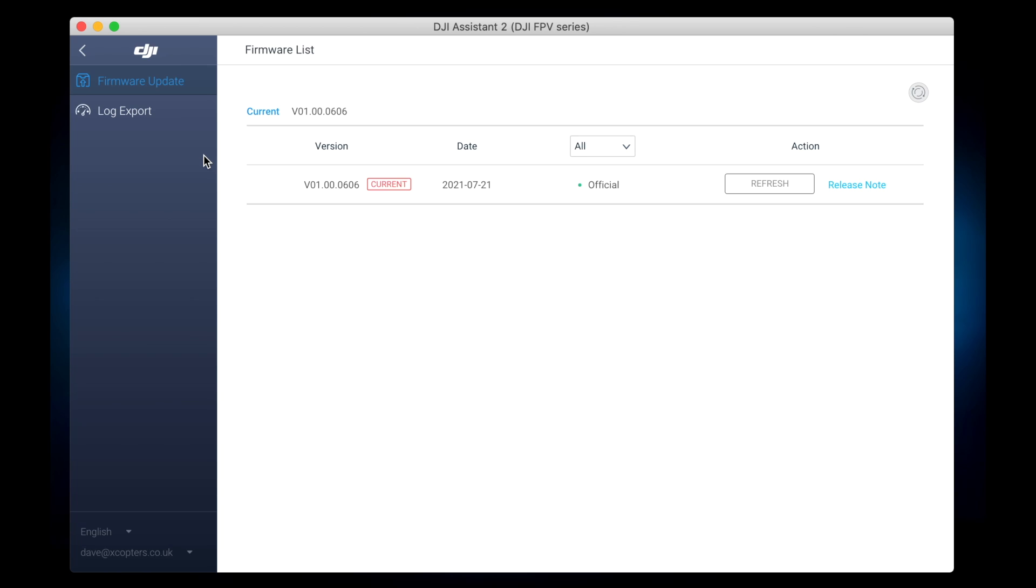It's doing its check and I've already done the upgrade on this, so we're on version 1.00.0606. But if you're out of date then you can just upgrade and it'll have a list down here. Or if you haven't activated the unit you will be prompted. Just go to DJI, set up an account, and you're done.